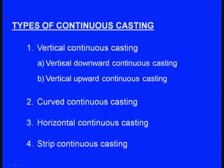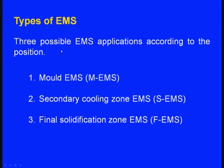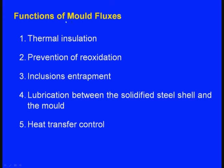We are about to complete. Let us review what we have learnt. We have learnt the types of continuous casting process: vertical continuous casting (divided into vertical downwards and vertical upward), curved continuous casting, horizontal continuous casting, and strip continuous casting. We have learnt the three types of electromagnetic stirring — mould EMS, secondary cooling zone EMS, and final solidification zone EMS. We have learnt the functions of mould fluxes. Finally, we have learnt about different continuous casting defects. With this we are closing this lecture on the continuous casting process. Thank you.